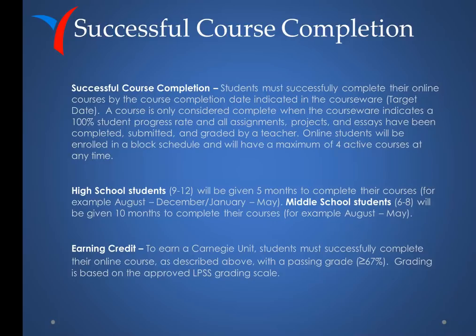High school students in grades 9–12 will be given five months (one semester) to complete their courses — for example, August to December and January through May. Middle school students in grades 6–8 will be given the entire school year, or 10 months, to complete their courses — for example, August to May. To earn a Carnegie unit, students must successfully complete their online course with a passing grade of 67% or greater. Grading is based on the approved LPSS grading scale.